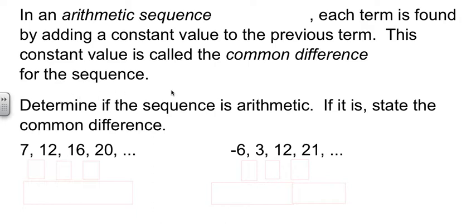So, they want us to determine if we're looking at an arithmetic sequence, and if we are, then they want us to name the common difference. We have a sequence here, 7, and then 12, and then 16, and then 20, and so forth. What do we add to 7 to get to 12? We add 5. From 12 up to 16, we add 4. That's not looking good. We add 4 to get to 20. We didn't add the same thing each time. So, this one is not an arithmetic sequence.